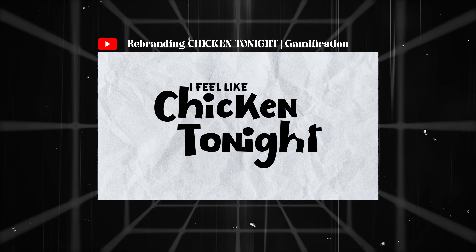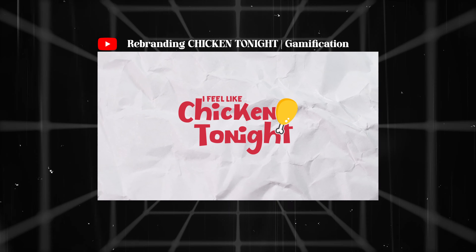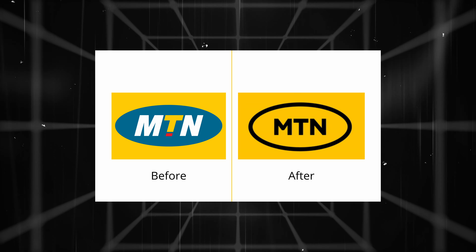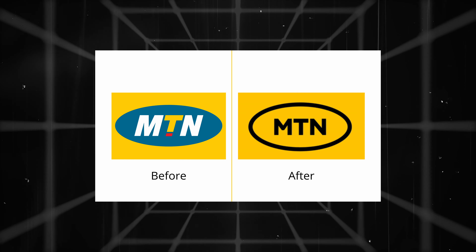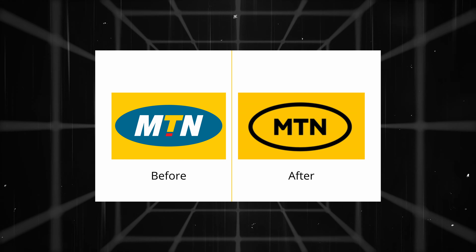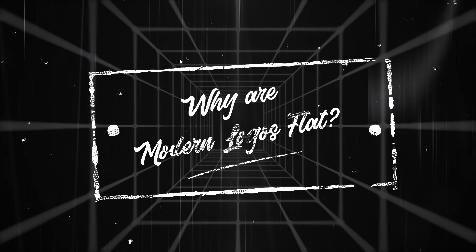After our most recent 'What If' video where we redesigned the Chicken Tonight logo, many asked that our next brand be MTN. Coincidentally, a week after that, MTN actually rebranded their logo and changed it to a more minimalistic style, trying to infuse that modern day feel. It got me thinking: why are modern day logos flat? Why are they moving from 3D to flat design?